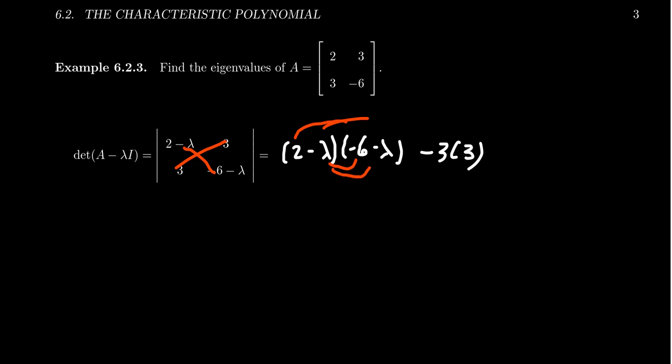If you look at all those possible combinations, you end up with negative 12 minus two lambda plus six lambda plus lambda squared. And then you also get that minus nine, three times three. So combining some like terms, we get lambda squared. In terms of the lambdas, we're going to get four lambda. And then in the end, we end up with negative 21 as our characteristic polynomial.